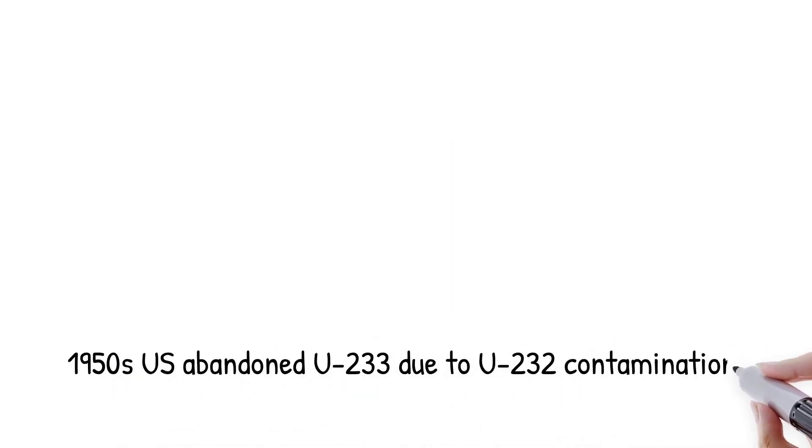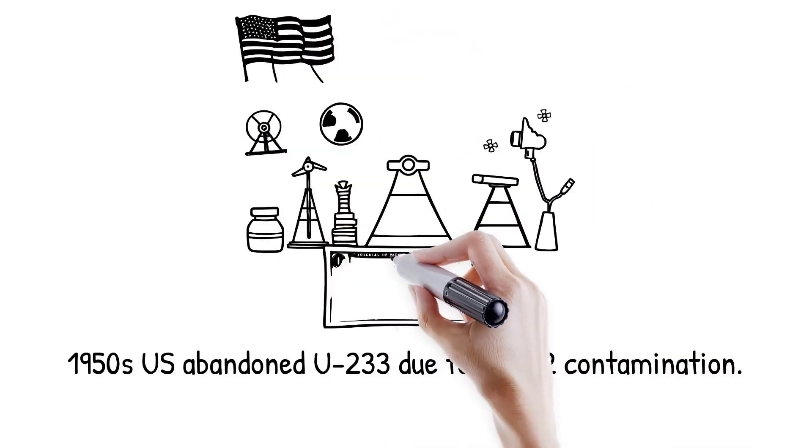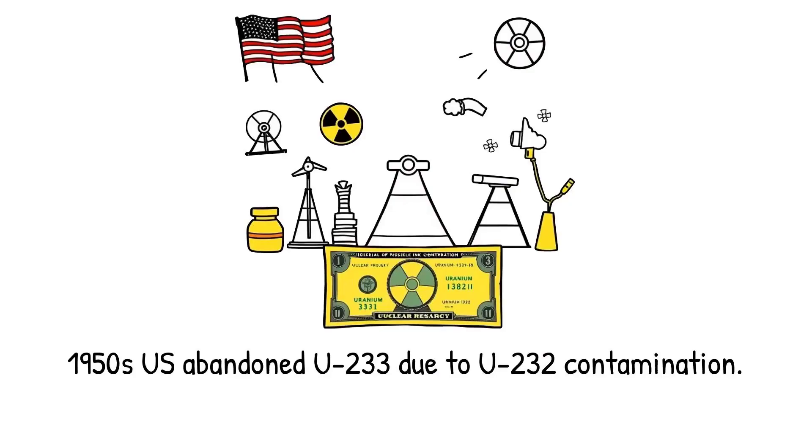For example, US weapons research in the 1950s abandoned uranium-233 because of dangerous uranium-232 contamination. Analogy: it's like putting invisible ink in currency. Any attempt to steal or forge it becomes immediately obvious.